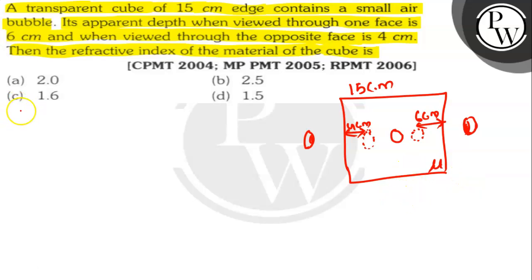So here apparent depth. We will find out apparent depth. And we know that the formula of apparent depth is actual depth upon mu. So here we will put the values here. From here to here we will find out the mu of that medium.